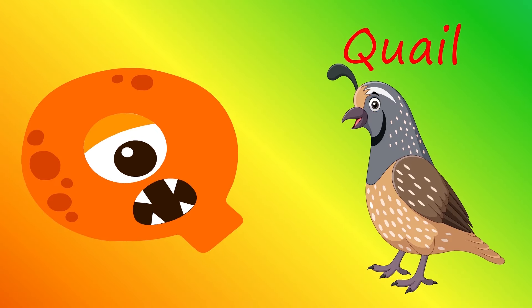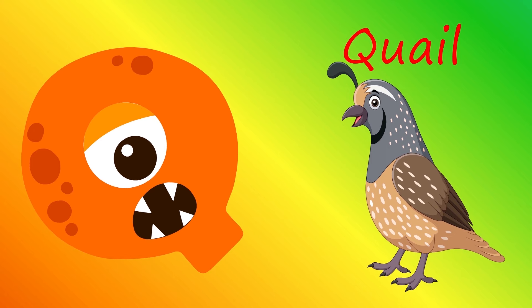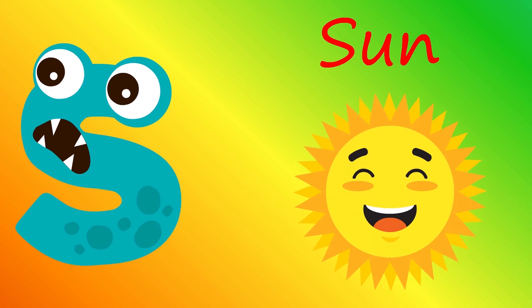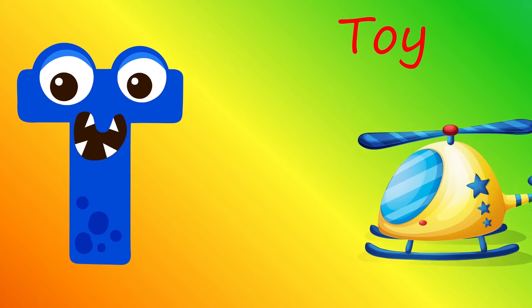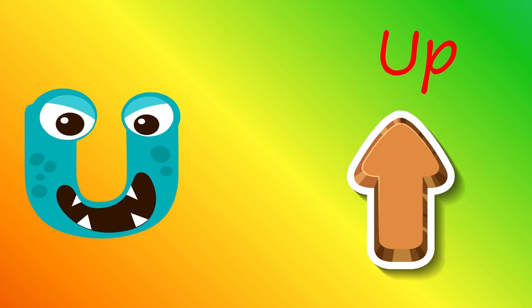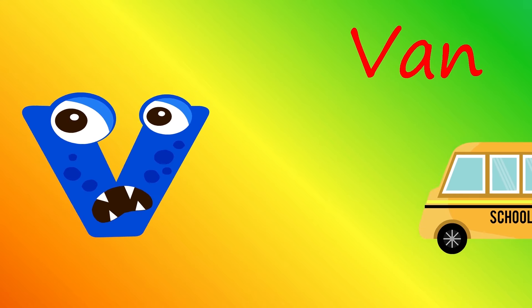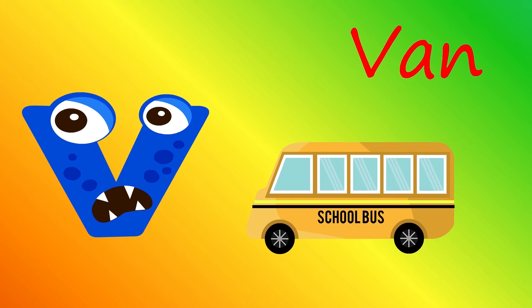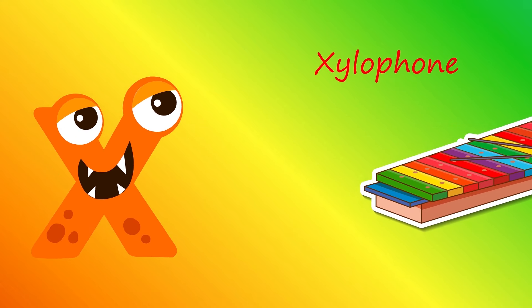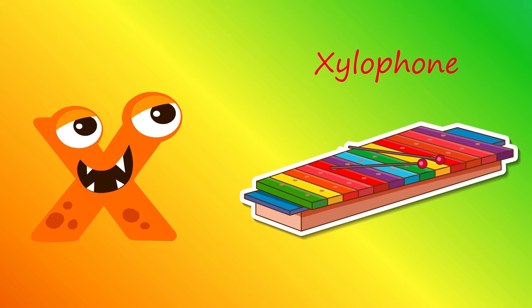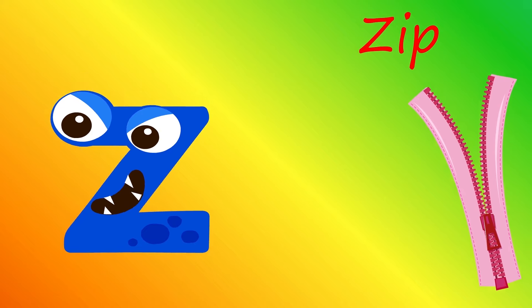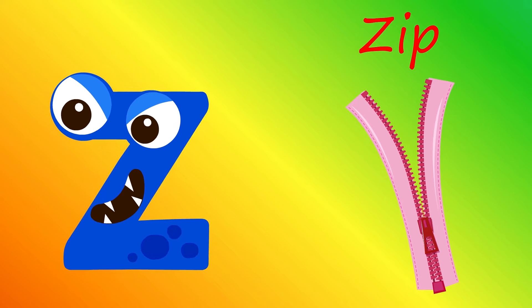Q — Crocodile. R — Rain. S — Sun. T — Toy. U — Up. V — Van. W — Wall. X — Xylophone. Y — Yacht. Z — Zip.